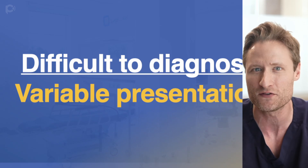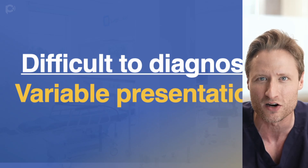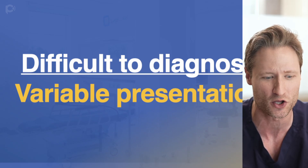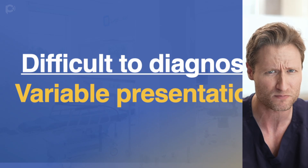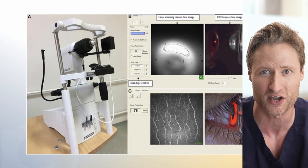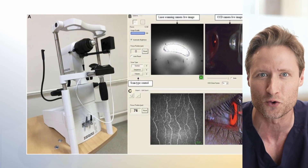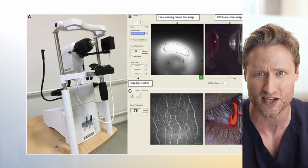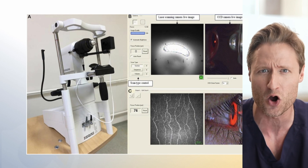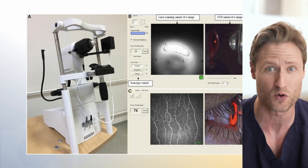So what options do you have if you suspect some weird, nonspecific corneal problem? Well, classically, lots of people think about confocal microscopy — can you look for the cysts in the corneal stroma?